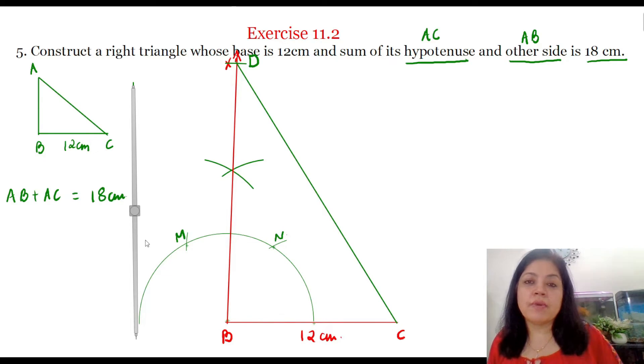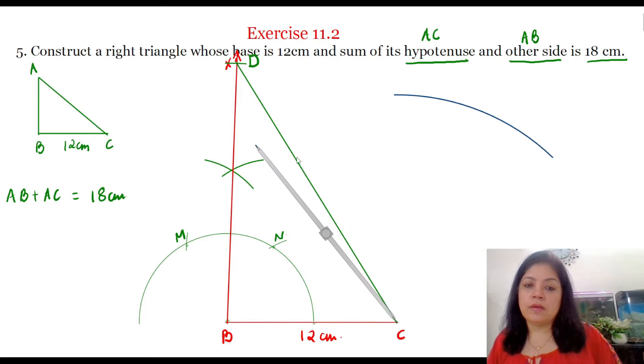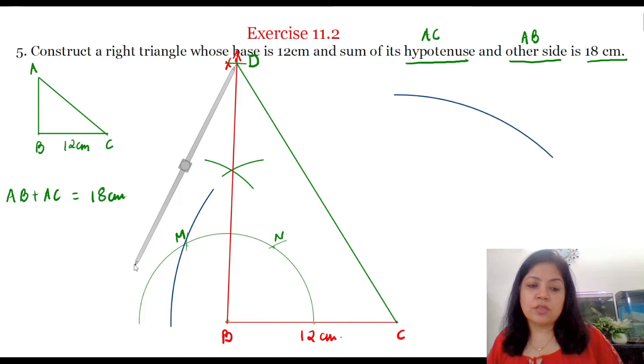So let us draw a perpendicular bisector of CD. So place your compass at point C and radius greater than half of CD will draw two arcs above and below the line CD. Now with the same radius, we will place the compass at point D and cut the two arcs drawn previously above and below the line CD.